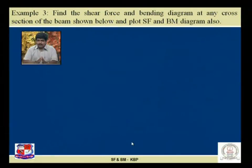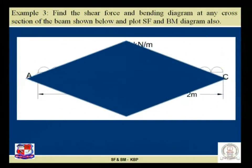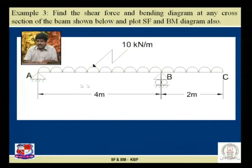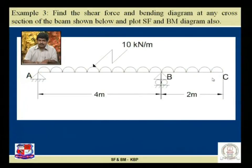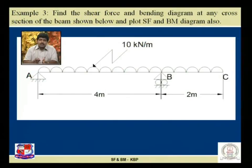Up till now, in previous classes we solved two basic problems. Now we go to the third problem — specifically a problem of overhanging beam. Visualize a beam whose one end or both ends are projected beyond the support; this is the free part with no support applied. This beam is known as an overhanging beam subjected to a UDL throughout the length. The support distance is 4 meters and the overhanging projection is 2 meters, subjected to a UDL of 10 kN per meter. To find the shear force and bending moment, the first step is to find out the unknown parameters — the support reactions.